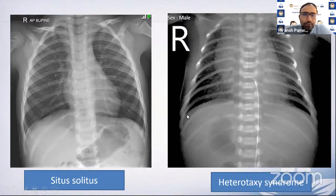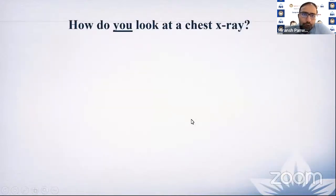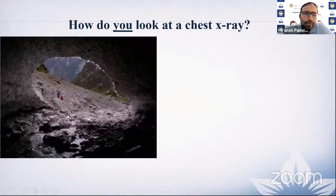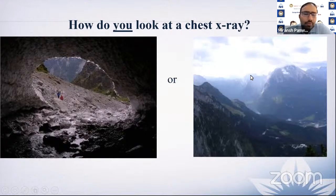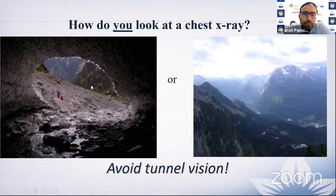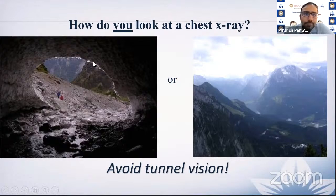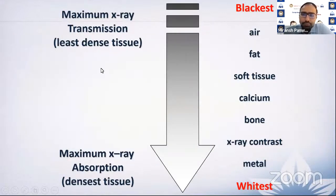The key question is: how do you look at a chest X-ray? You want a broad, panoramic view rather than a tunnel vision focused only on lung fields. Always assess bones, surrounding structures, and even the visualized portion of the upper abdomen. A few basic words: X-ray and CT form images by transmission of X-rays, which depends on tissue density.